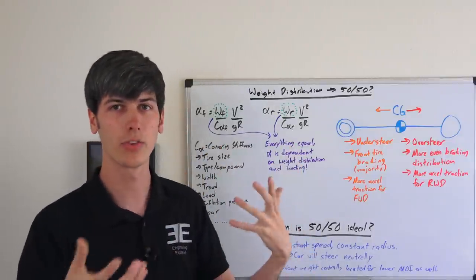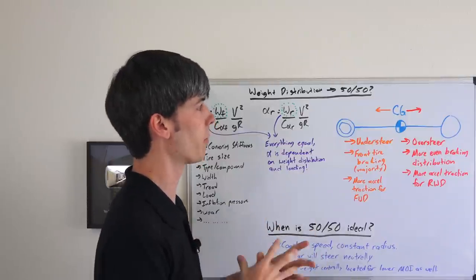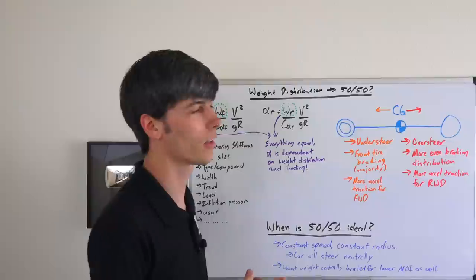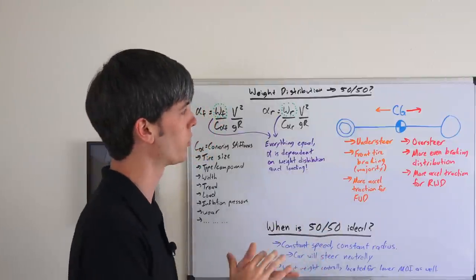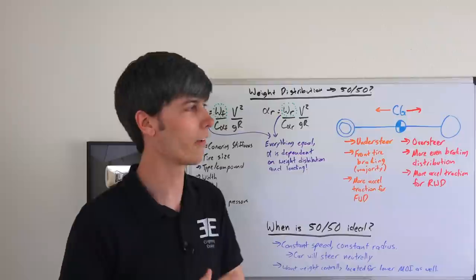That's the whole reason why this has been considered to be ideal, even though it might not necessarily be ideal. Plenty of cars out there do not use a 50-50 weight distribution because there are benefits of moving that center of gravity back.